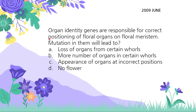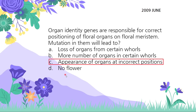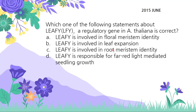The next question asks about floral organ identity genes being responsible for correct positioning of flowers. If you have any mutated class A, B, or C genes, obviously one part would look like a different organ. So the answer is: appearance of organs at incorrect positions — that's what would happen.